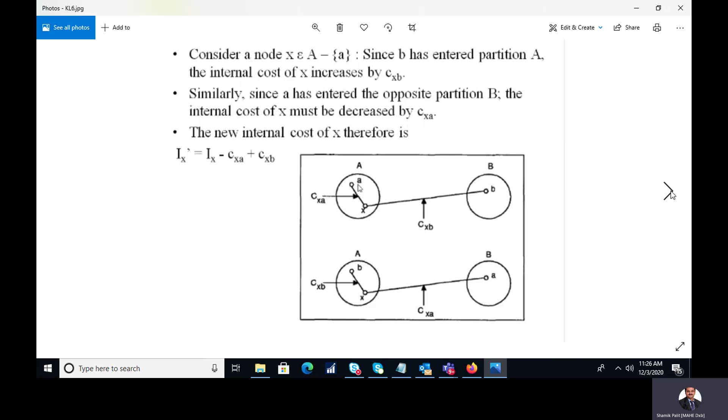So thus we can say the new internal cost Ix' can be represented in the following way: The old internal cost Ix minus Cxa as A has already moved from cluster A to cluster B, so that's why there is no Cxa, it will be reduced. And as B came to the cluster A from the cluster B after interchange, so it is going to increase the internal cost by Cxb. So thus it becomes Ix minus Cxa plus Cxb.